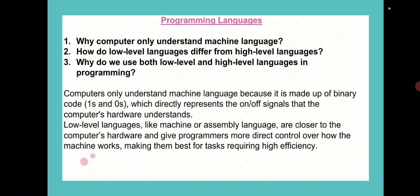Next topic is Programming Languages. Why do computers only understand machine language? How do low-level languages differ from high-level languages? Why do we use both low-level and high-level languages in programming? Computers understand machine language because the architecture of computers is dependent on binary code. It is dependent on on-off signals that the computer's hardware understands.